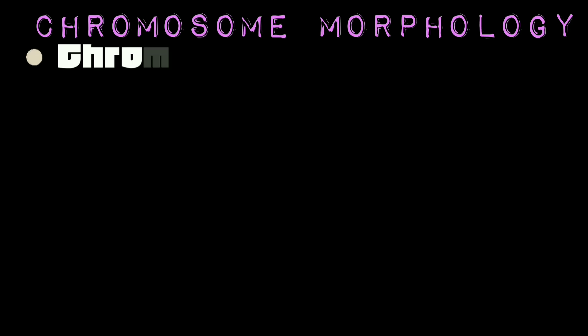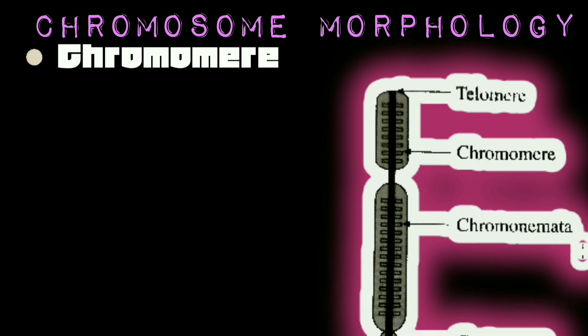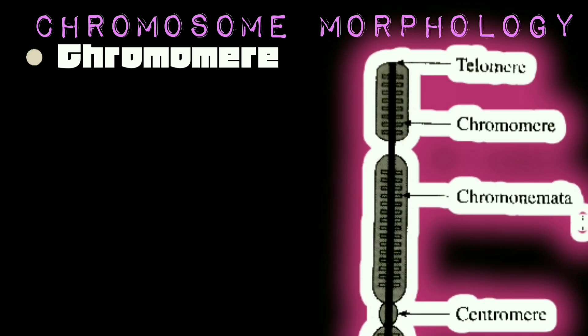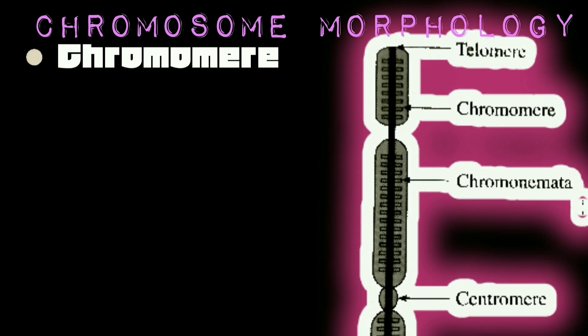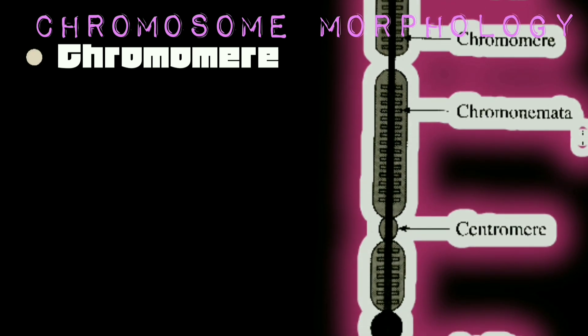Chromomeres: In some species, such as maize and amphibia, chromosomes during the first prophase of meiosis — more particularly during pachytene — show small bead-like structures called chromomeres. Chromomeres are mostly visible in the dipteran giant salivary gland chromosomes as dark staining bands. This is all about basic chromosome morphology.